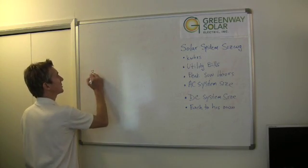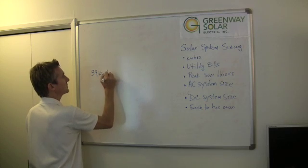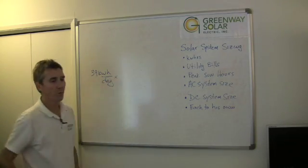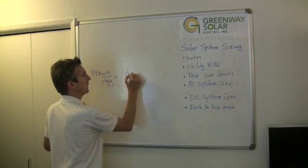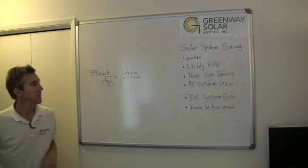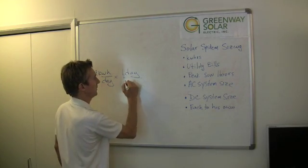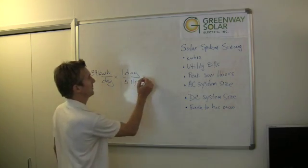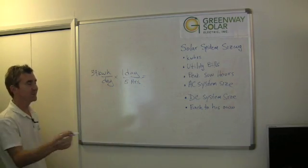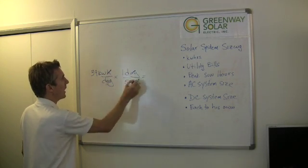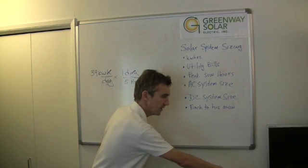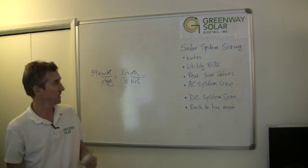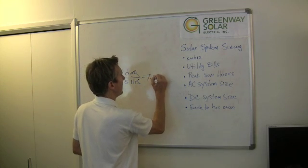So let's take, for example, the customer who uses 39 kilowatt hours per day. So we just said in one day they receive about five peak sun hours. Five hours. So I'm going to use a little bit of cancellation here. One day, one day. This is an hour, an hour. If I divide 39 by five, let me get my calculator out. I can probably do that in my head but just to be exact. 39 divided by five is 7.8 kilowatt.